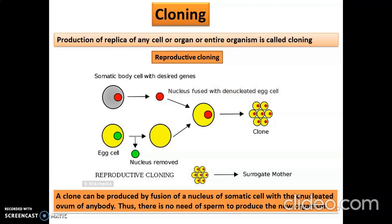There are two types of cloning. One is reproductive cloning: a somatic body cell provides the desired gene and an egg cell has its nucleus removed. This egg cell is fused with the nucleus from the somatic cell, and ultimately a clone is made that could be put in a surrogate mother. This clone can be produced by fusion of the nucleus of a somatic cell with an enucleated ovum. There is no need of sperm to produce a new organism — it can be done with just the egg and any body cell.